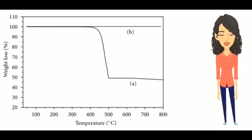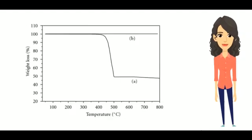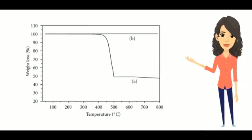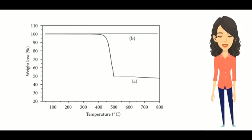This is the TGA curve for silver nitrate. The horizontal portion of the curve shows there is no change in weight.